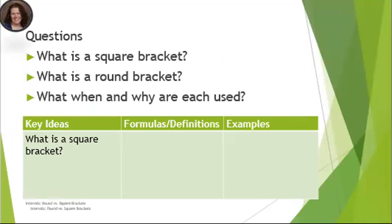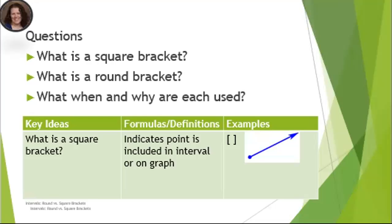First key idea: what is a square bracket? The definition is it indicates that a point is included in the interval or the graph. There's the square brackets and there's a line segment, and notice there's a closed circle - that closed circle tells us the point is included on the graph.